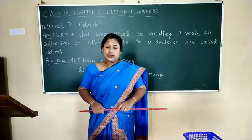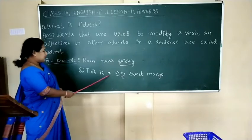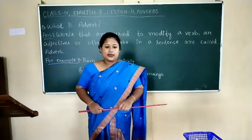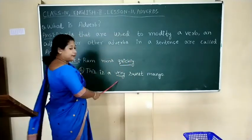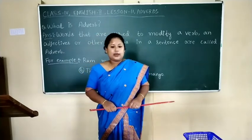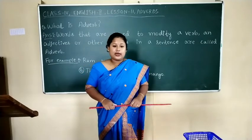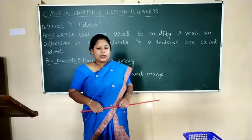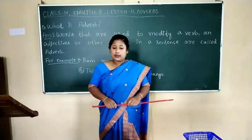Let us take another example: This is a very sweet mango. In this sentence, the word very is showing how much or in what degree. Very is modifying the adjective sweet — meaning how sweet the mango is. It is very sweet.